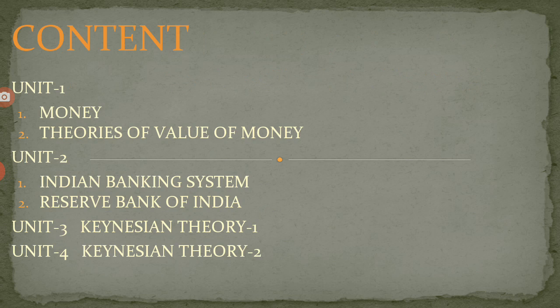Unit 2 also contains 2 sub-chapters. The first is the Indian Banking System, which covers definition and types of banks, functions performed by commercial banks, their importance, nationalized banks with reference to non-performing assets, and the credit creation process. Unit 3 is Keynesian Theory 1, which includes Meaning of Aggregate Demand, its determining factors, Propensity to Consume — Average Propensity to Consume and Marginal Propensity to Consume — and Average and Marginal Propensity to Save. Unit 4 is Keynesian Theory 2, covering marginal efficiency of capital, rate of interest, Employment Theory, and the Concept of Multiplier.